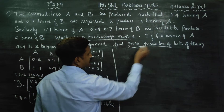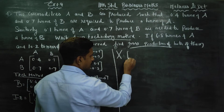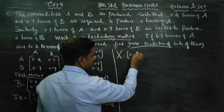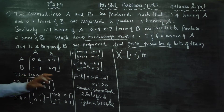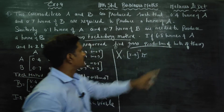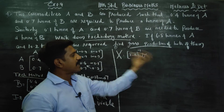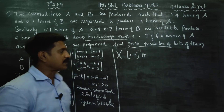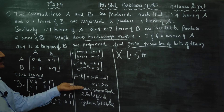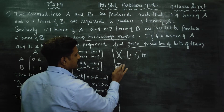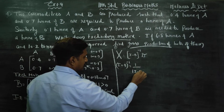Gross output is denoted by X. If X is the gross output, then X equals (I minus B) inverse into the demand matrix D. The demand function is the given demand vector.